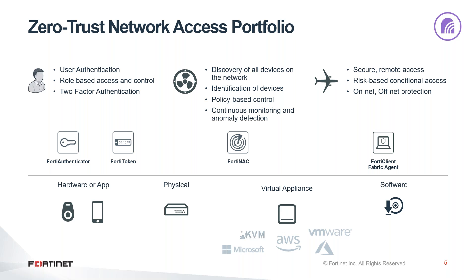We also keep an eye on endpoint devices. If their status changes, we need to know their status. If their status changes within seconds, we can take action directly with those devices. Finally, we can protect remote users using our FortiClient fabric agent, which fulfills remote access VPN. It acts as a remote access VPN client and also as a complete endpoint security solution for remote users.